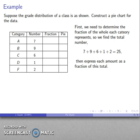Now, then we want to express each of these amounts as a fraction of the entirety. So this category A, that's 7 out of 25, and so that's going to be the fraction 7 25ths. Category B, that's 9 out of 25, so the fraction's going to be 9 25ths, and so on.